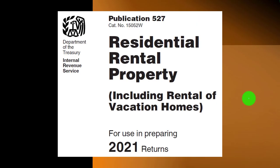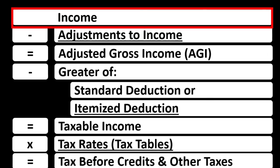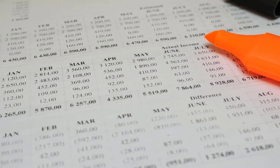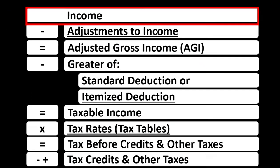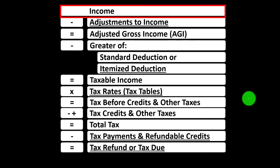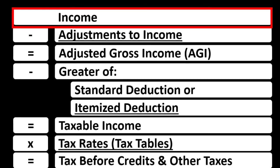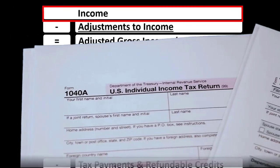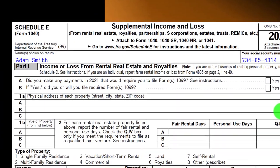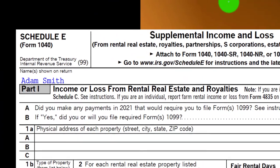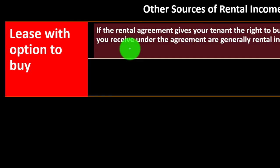Looking at the Income Tax Formula, Line 1 Income — we would typically have another schedule, basically an income statement with income and expenses. Expenses basically being deductions. The net then rolls into Line 1 Income on the Income Tax Formula and eventually onto the first page of Form 1040. This is the Schedule E, basically the income statement type of schedule — Supplemental Income and Loss, focused on rental real estate.